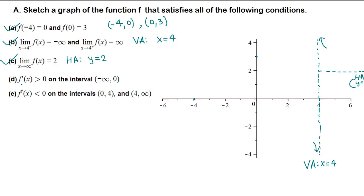The first derivative f' is positive, meaning the function is increasing on (-∞, 0) — from negative infinity all the way to 0, this part of the graph is increasing. The derivative is negative on the intervals (0, 4) and (4, ∞), so the function is decreasing on those intervals.